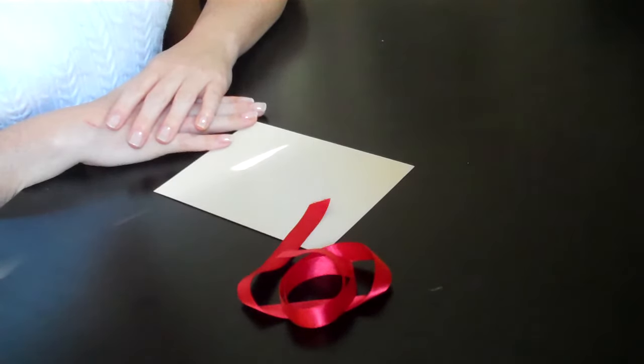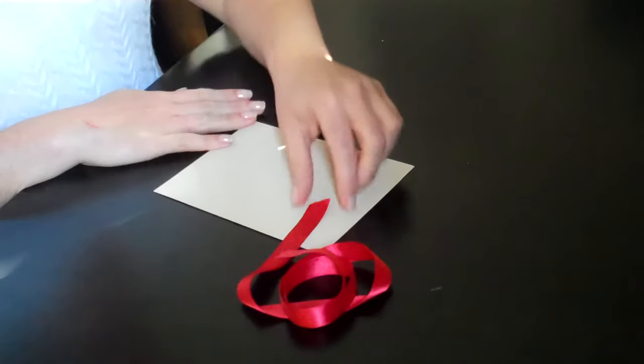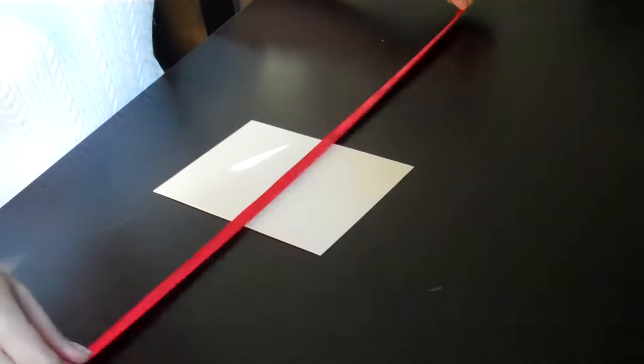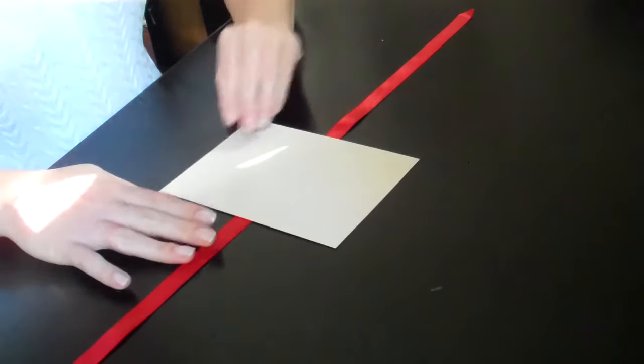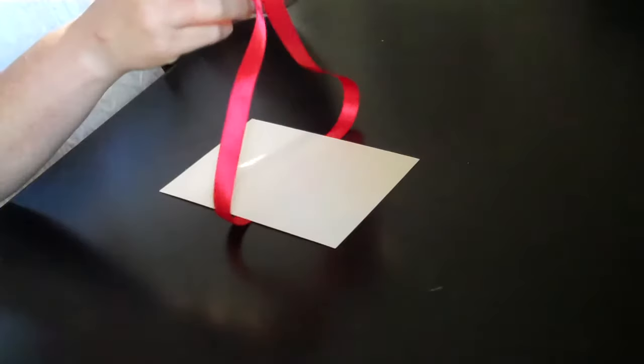I'm going to show you how to make a classic bow tie. The first step is to lay your ribbon flat, bring your invitation on top of your ribbon, making sure that it is centered.